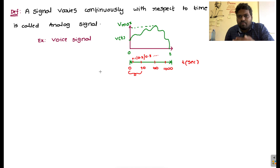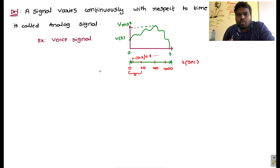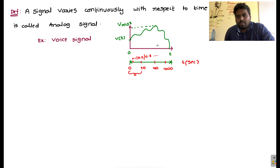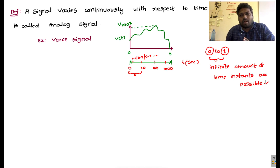For that infinite number of time instants, we can define the amplitude continuously by considering the y-axis. The amplitude varies with respect to time in a continuous fashion, and that is why it is called an analog signal. Taking the complete range from 0 to T, an infinite number of time instants are possible, and for all those instants you can define amplitude. This is the definition and explanation of an analog signal.